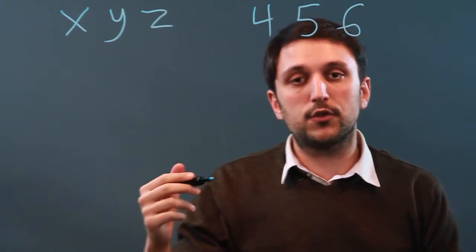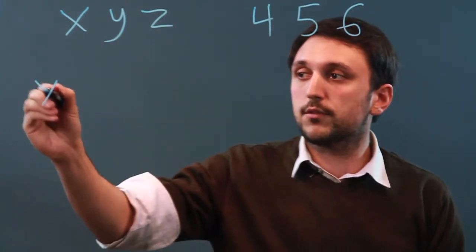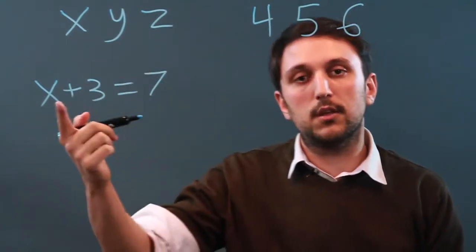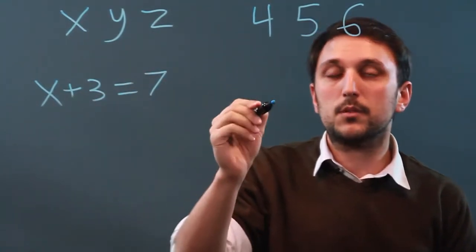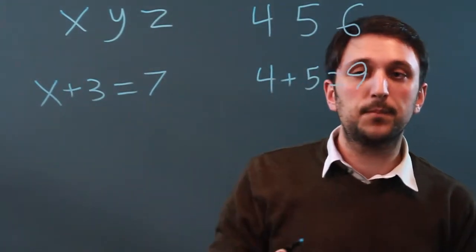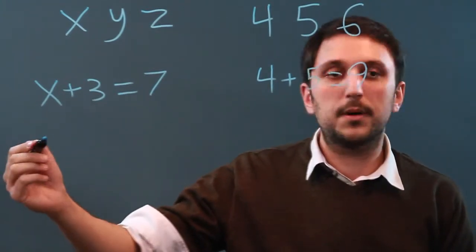So, a full expression, though, has to have an operation as well. So, x plus 3 equals 7 is an algebraic expression. 4 plus 5 equals 9 is a non-algebraic expression. What about this one?